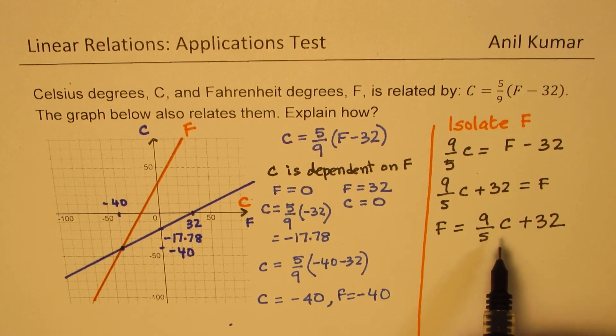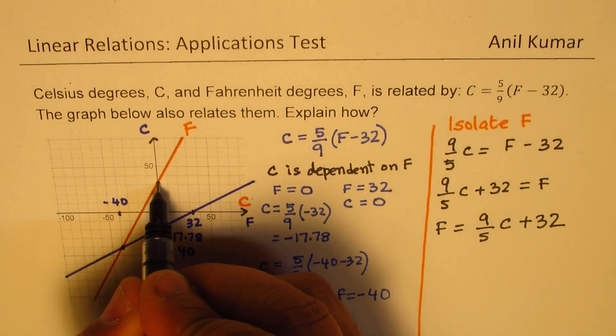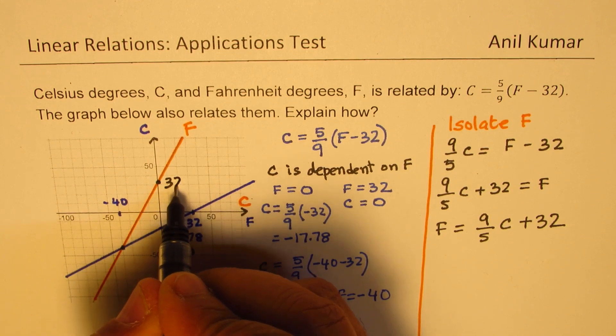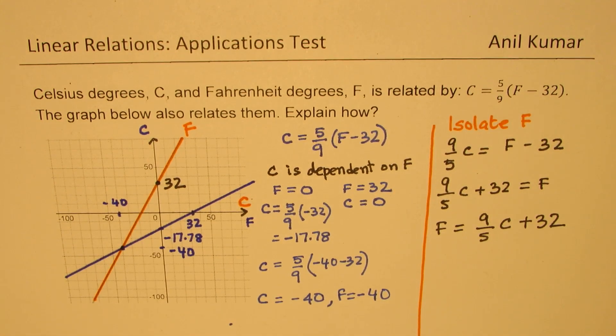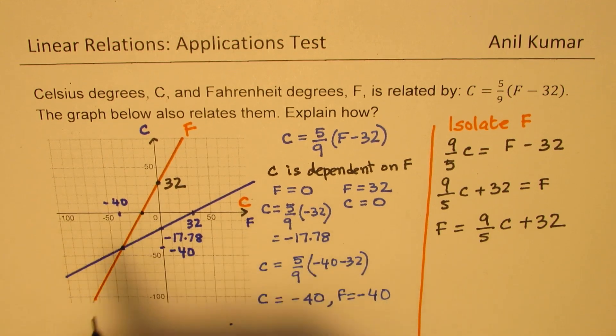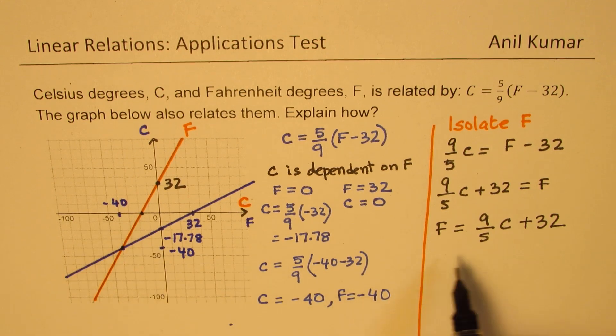If you now calculate for the value of C as 0, you'll get this as 32. This intercept here on that line should be 32. This gets reflected here on the line y equals to x. The intercept which now you get here will be minus 17.78. It's kind of a reverse calculation.